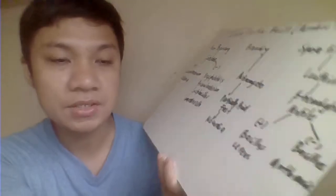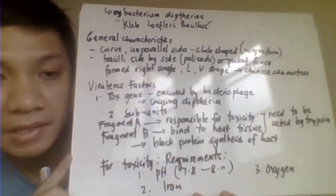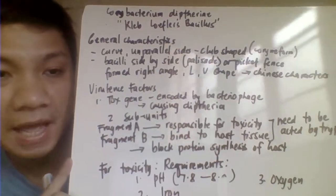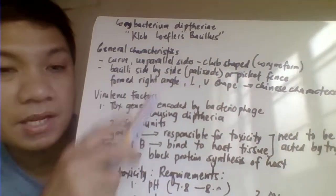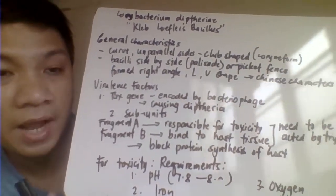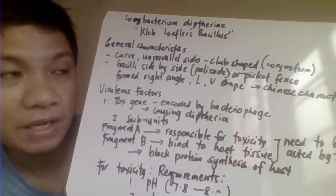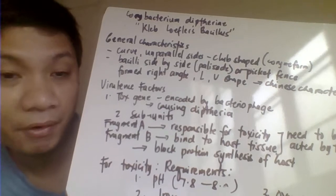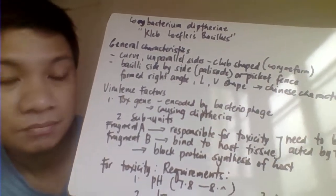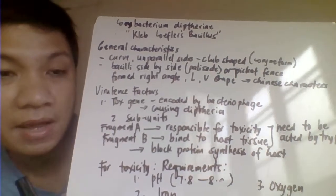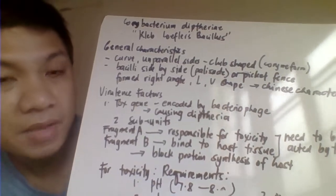We start our discussion with Corynebacterium diphtheriae, also known as Klebs-Löffler's bacillus. Under the microscope with gram staining, it would have slightly curved, parallel sides giving a club-shape morphology. That's why it's called coryneform — because of being club-shaped. This bacillus may arrange side by side giving a palisade arrangement.